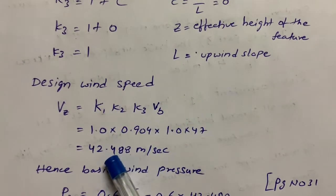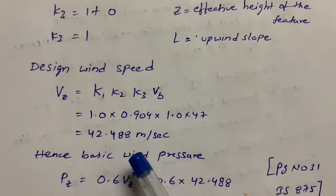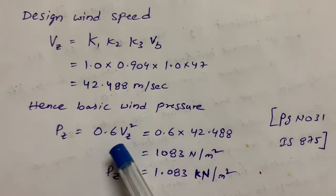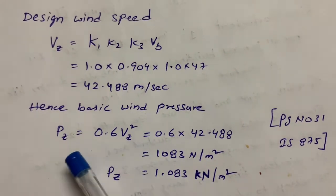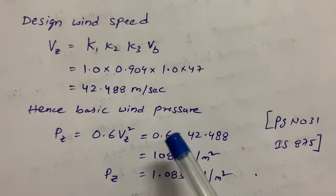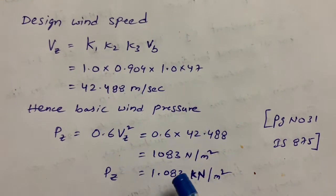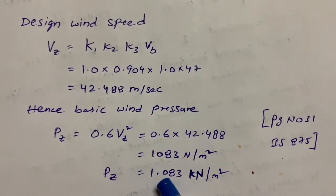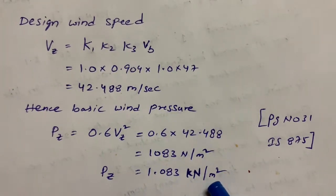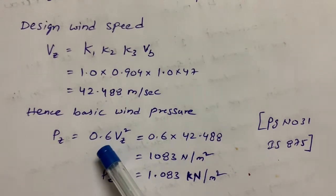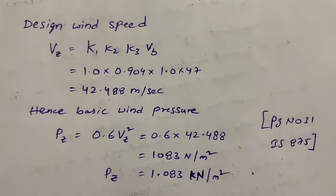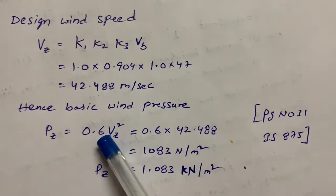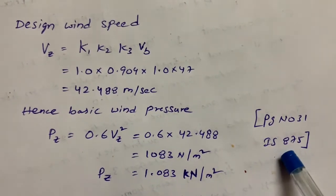Finally, basic wind pressure formula is Pz = 0.6 × Vz². So Pz = 0.6 × 42.488² = 1.083 kN/m². This formula is available on page number 31, IS 875. The 0.6 is the coefficient which depends on atmospheric conditions and is specified in IS 875.